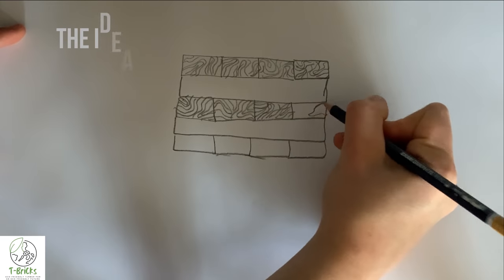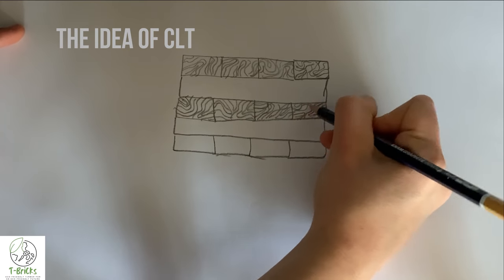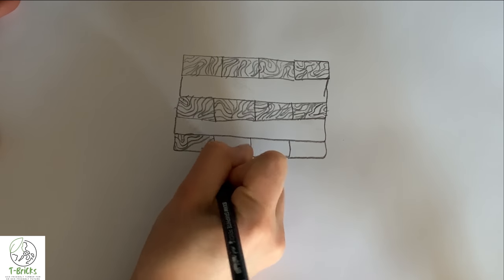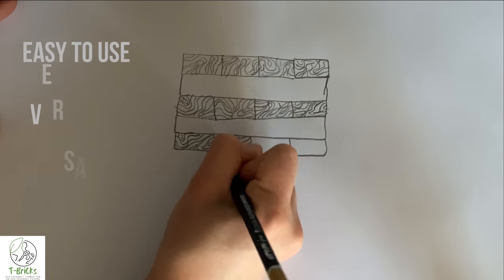T-Bricks takes the idea of CLT and reduces its size and weight into an easy to use brick so it's a more versatile building material.